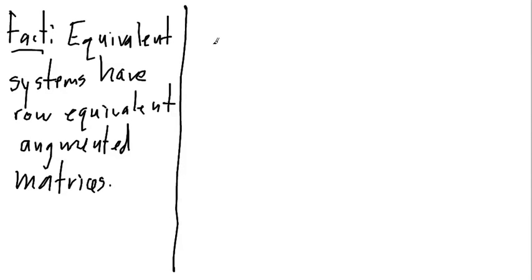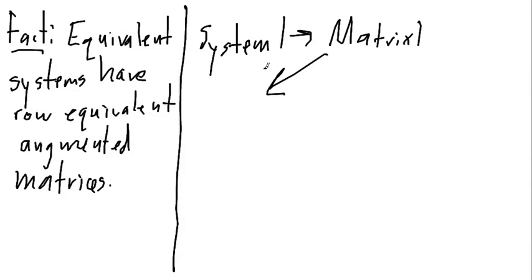So, really what this is is I have system 1, I go to matrix, it's corresponding matrix 1, and from here I get a similar, or excuse me, a row equivalent matrix 2, and this gives me system 2.